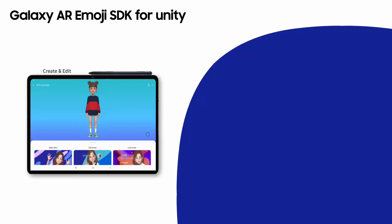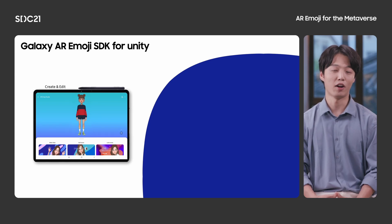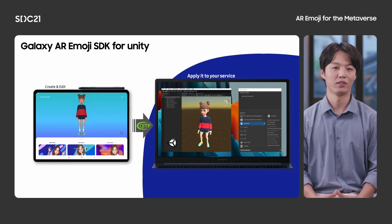If you want to develop avatar-based services, we have good news. I'm going to talk about the Galaxy AR Emoji SDK for Unity. How can we use this SDK to obtain an AR Emoji model from Samsung Galaxy devices? It is very simple. The AR Emoji Editor on Samsung devices enables users to create a 3D avatar model that can be used in other applications. The SDK provides a way to take, render, and animate avatar models. When you apply it to your service, that's what it feels like.